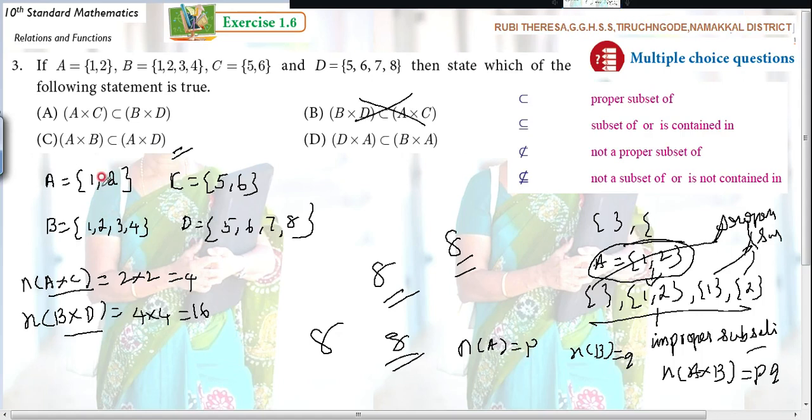Now you see the set. A is the proper subset of B, and C is the proper subset of D. Then automatically, A×C is the proper subset of B×D. A is the proper subset of B and C is the proper subset of D. Then automatically, A×C is the proper subset of B×D.